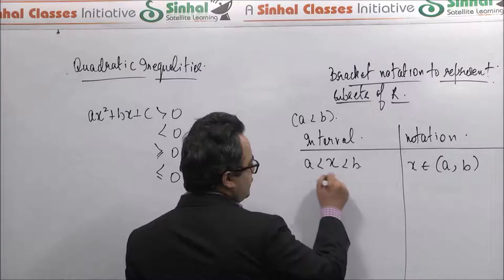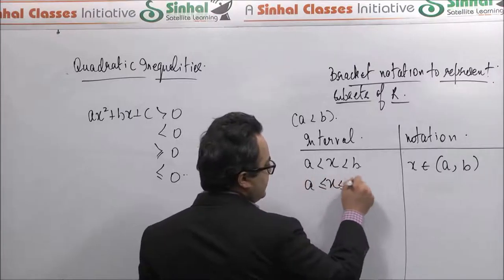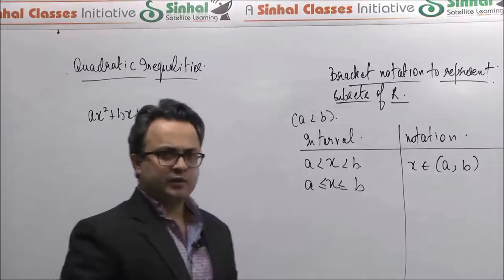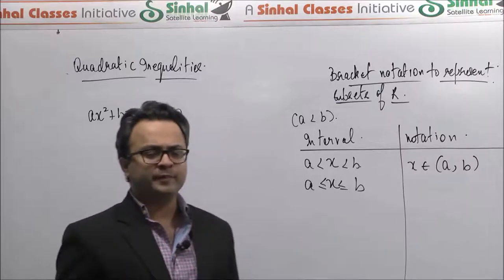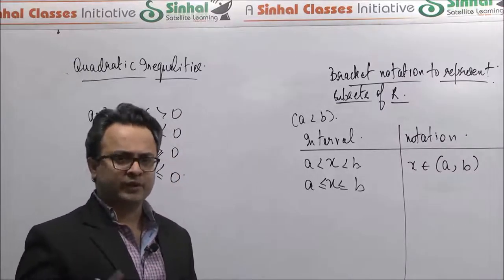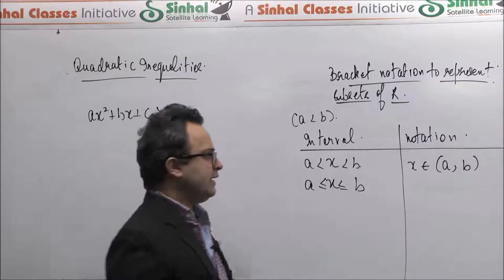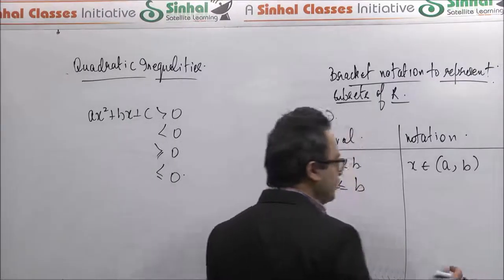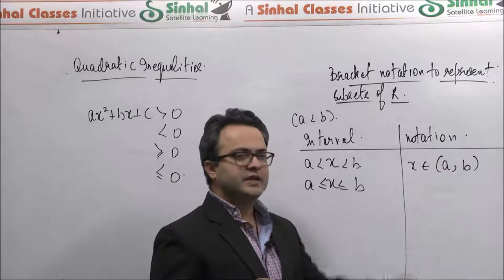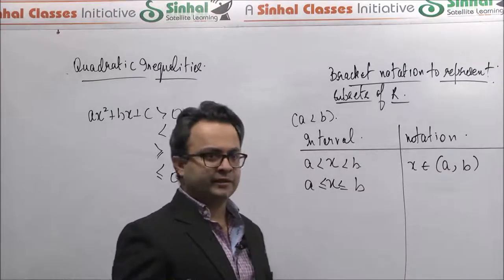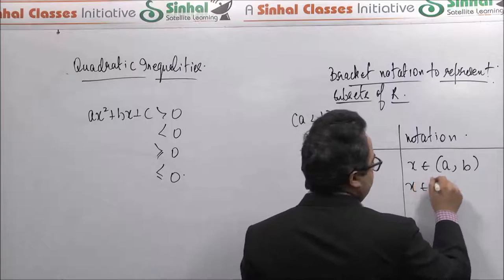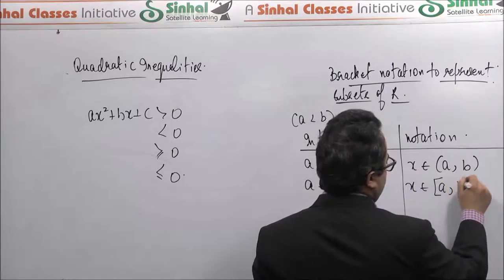Similarly, you might want to designate the set where x is greater than or equal to a and at the same time less than or equal to b — so the endpoints are included in this solution set. Whenever you want to include an endpoint, instead of a round bracket we use a square bracket at the corresponding endpoint. So in this case we say x belongs to square bracket a comma b.